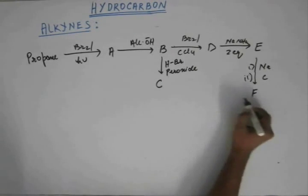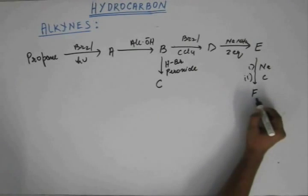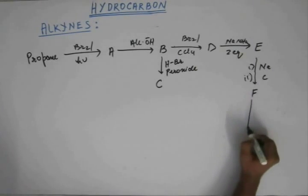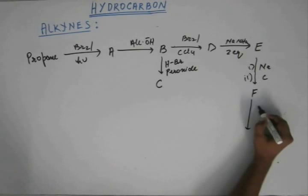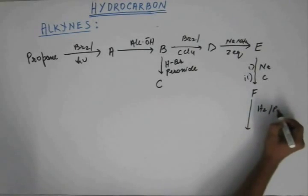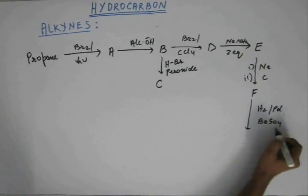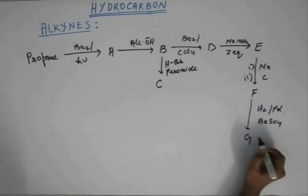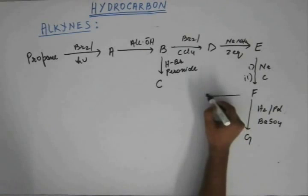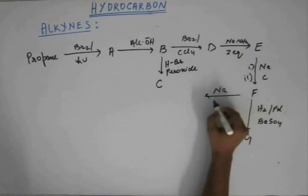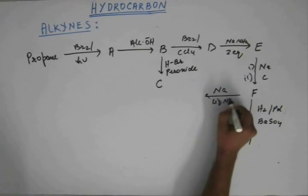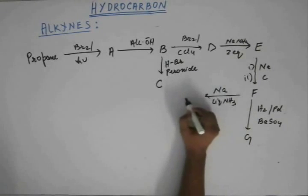On E, suppose I add sodium in the first step and C in the second step, then I would get F. And on F, if I give hydrogen with palladium catalyst, poison with barium sulfate, I get G. And if I add sodium in liquid ammonia, I get H.